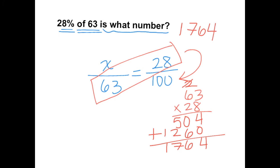Now we have to divide that by the number left over, which is 100. Dividing by 100 is the same as moving the decimal two places to the left, so that means our answer is 17.64.